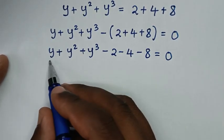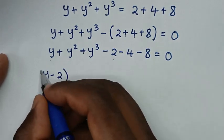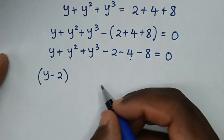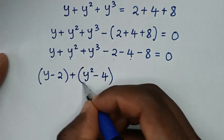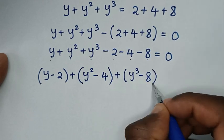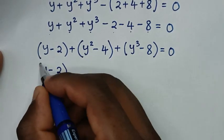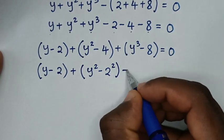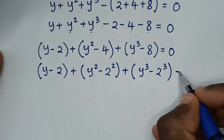We group the terms together: bracket y minus 2 bracket, plus bracket y square minus 4 bracket, plus bracket y power 3 minus 8 bracket equals 0. Note that 4 is the same as 2 square, and 8 is the same as 2 power 3.